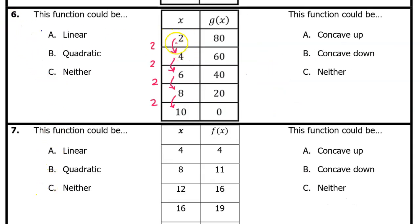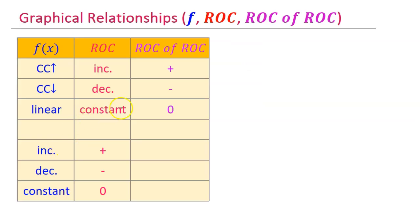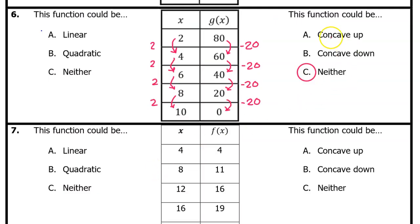For number 6, the input values are all changing by 2 again. The output values are decreasing by 20 every time. Since the input intervals are all the same, we can use the shortcut and simply say that the rate of change is a constant. And if the rate of change is a constant, then the function is linear, meaning neither concave up nor concave down. So on the right-hand side, the answer is C, and since the function is linear, on the left-hand side, the answer is A.